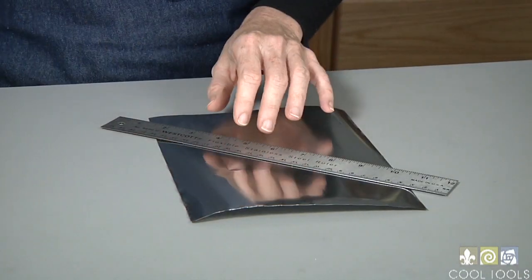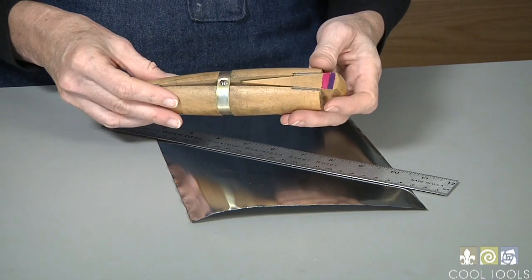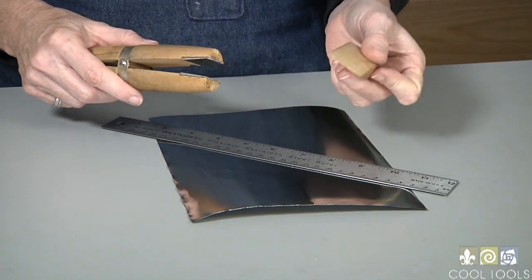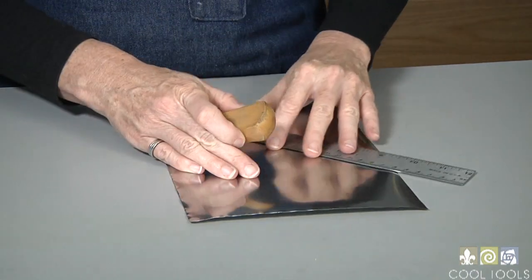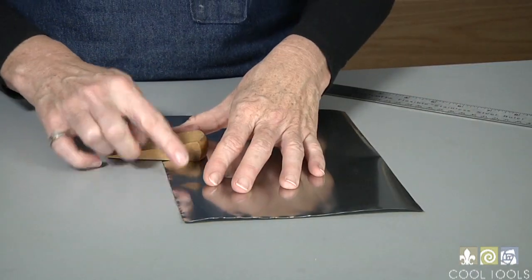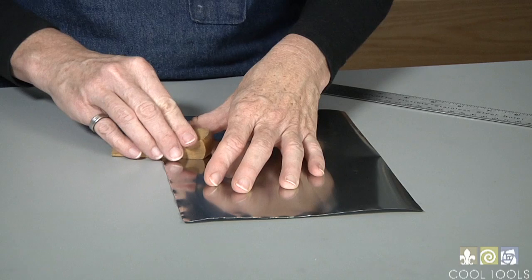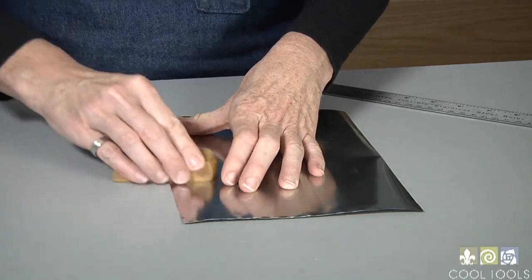Once I have my piece I need a burnisher, and I find that the wedge from my ring clamp makes the perfect burnishing tool. Here where I've cut with the scissors it's really rough, so I'm going to burnish that down and smooth it out.